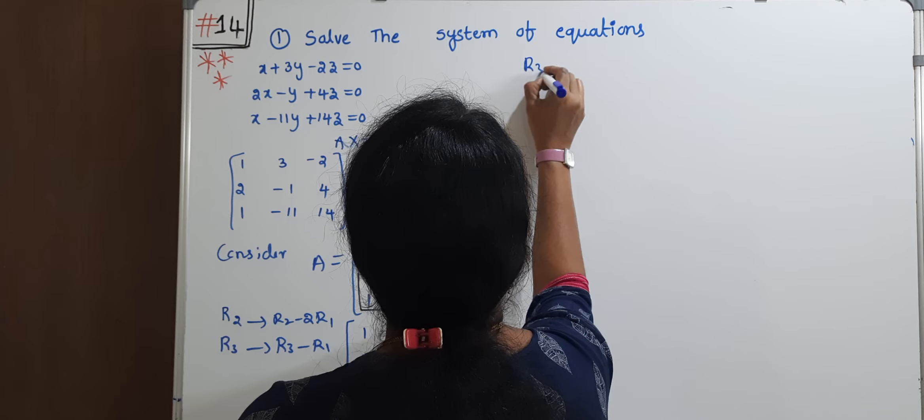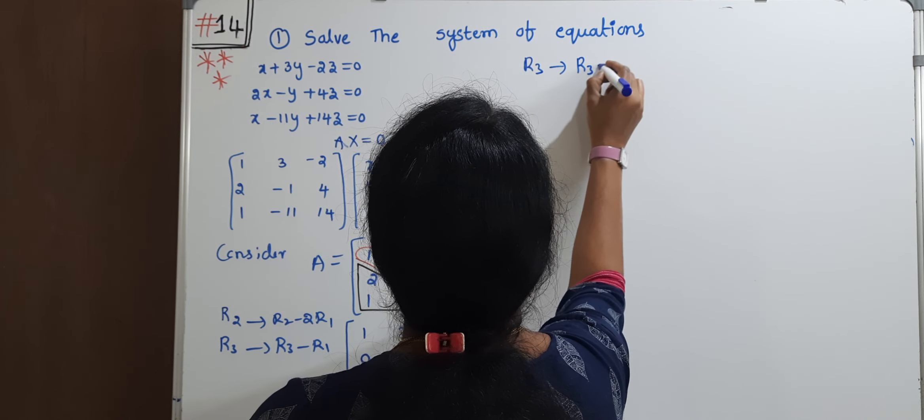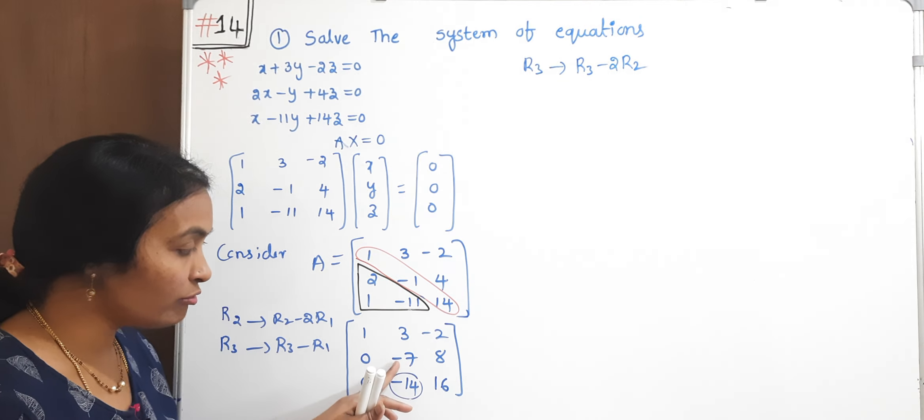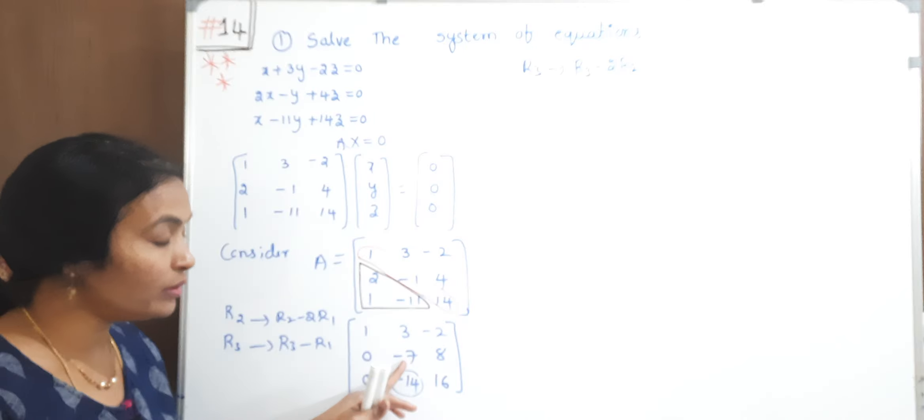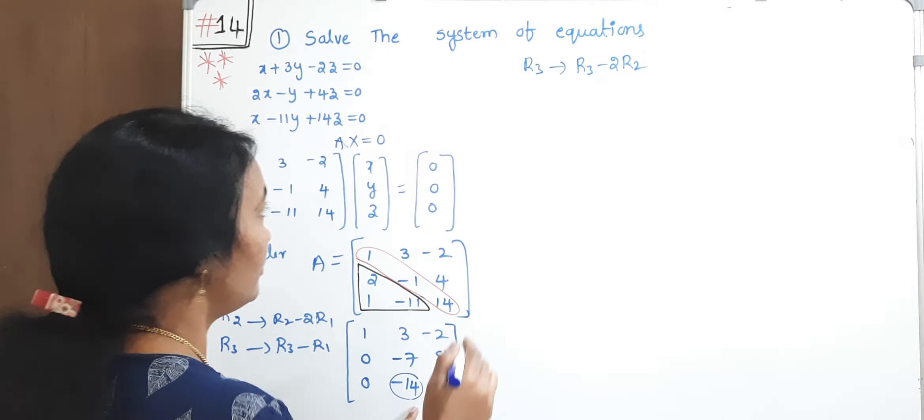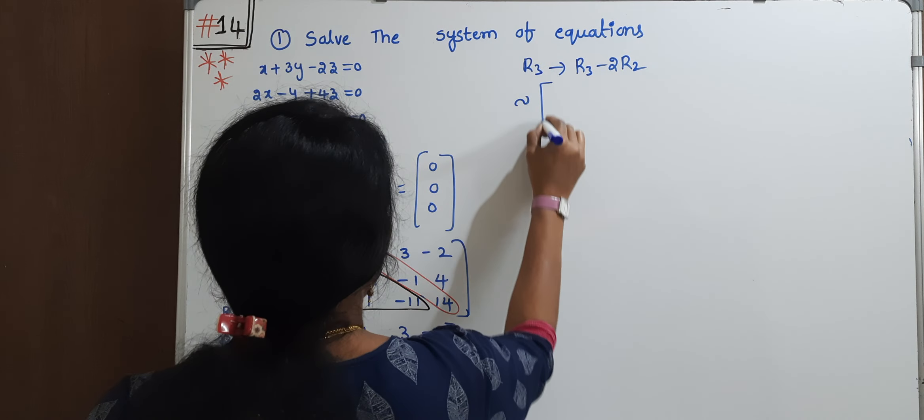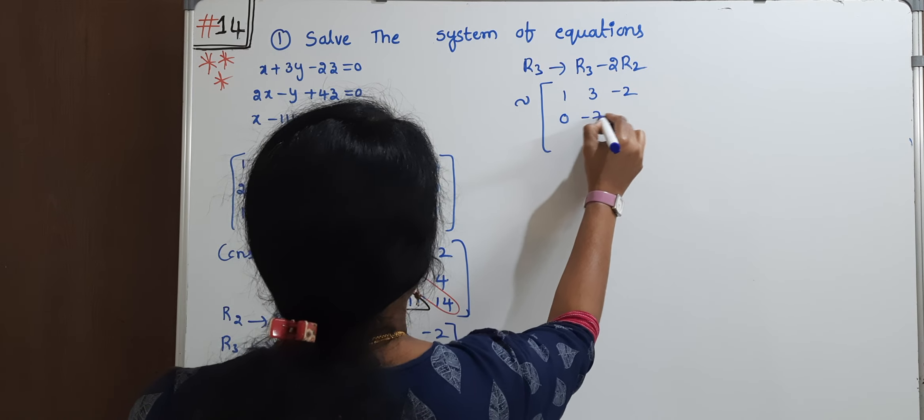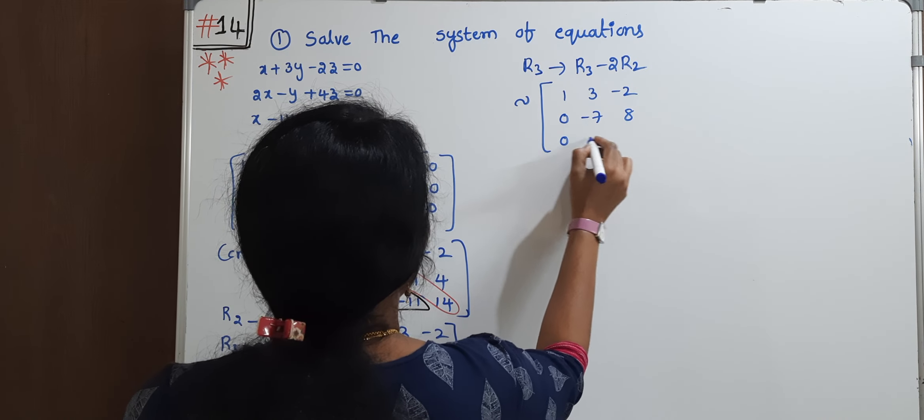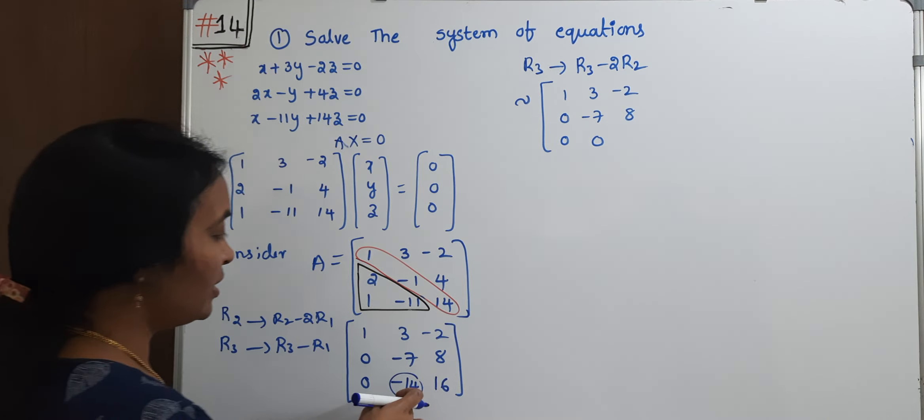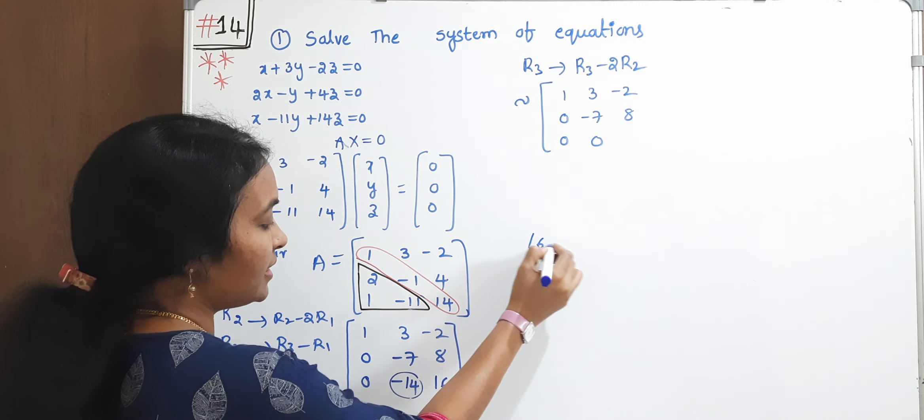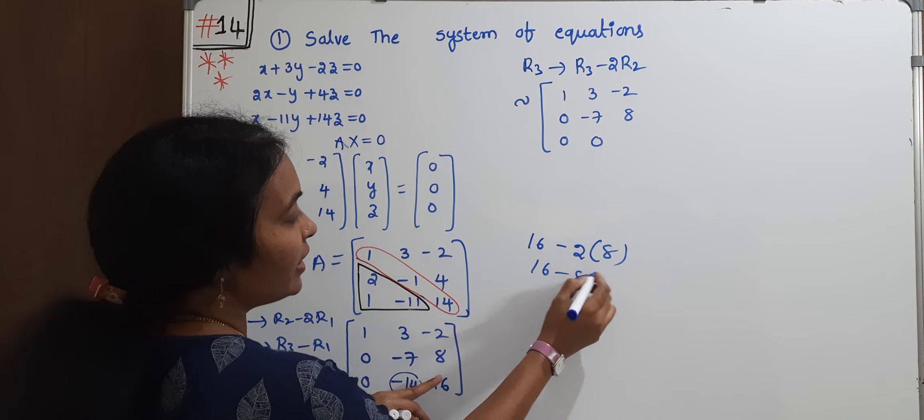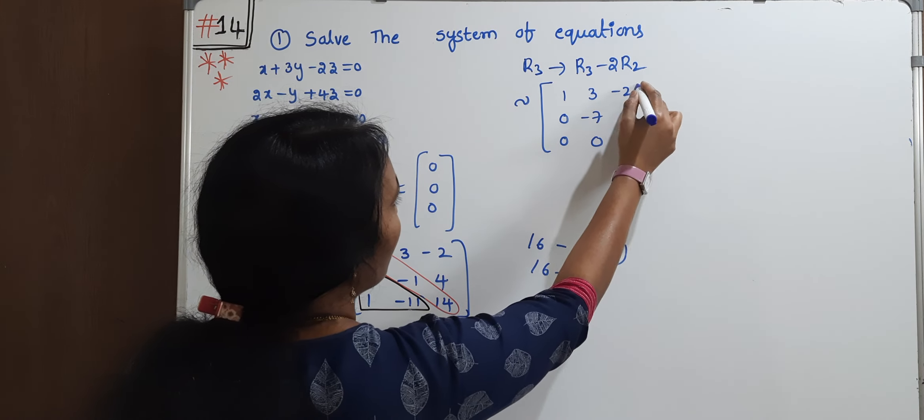Now I'm doing R3 implies R3 minus 2R2. R3 is 14, minus of minus plus is 2 into 7, 14. So it becomes 0. After this operation, I get 1, 3, -2; 0, -7, 8; 0, 0, 16 minus 16 is 0.